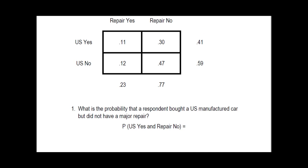Here is my completed matrix with all of my numbers. Now I'm going to ask the first question. What's the probability that the respondent bought a US manufactured car but did not have a major repair? So I'm dealing with these US yes people who had no repair, and that probability is at the intersection of that row and that column. So I now know that 30% of them, or there's a 30% probability that somebody bought a US car and it did not require a major repair within its first 12 months.